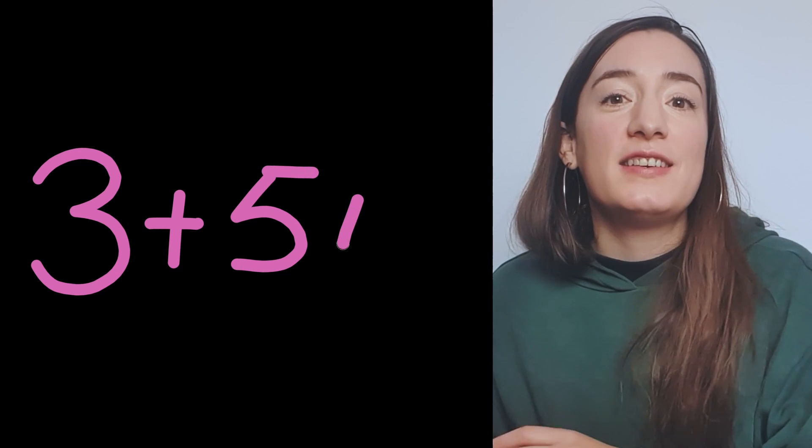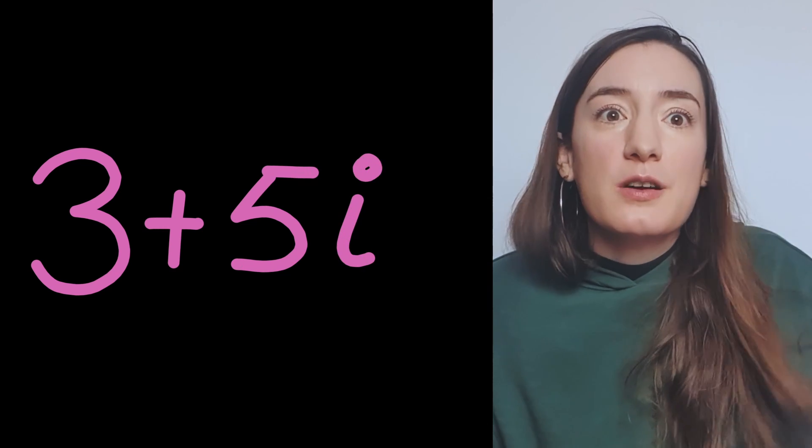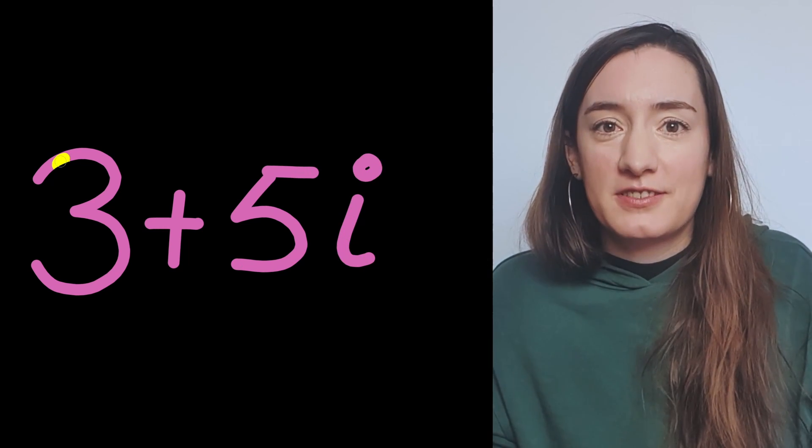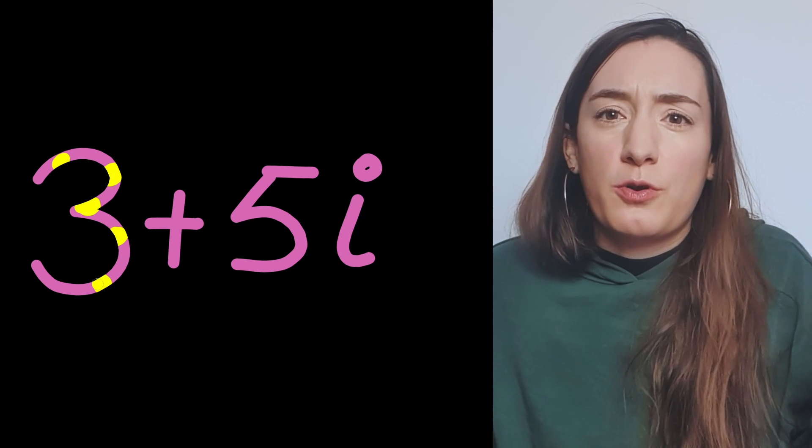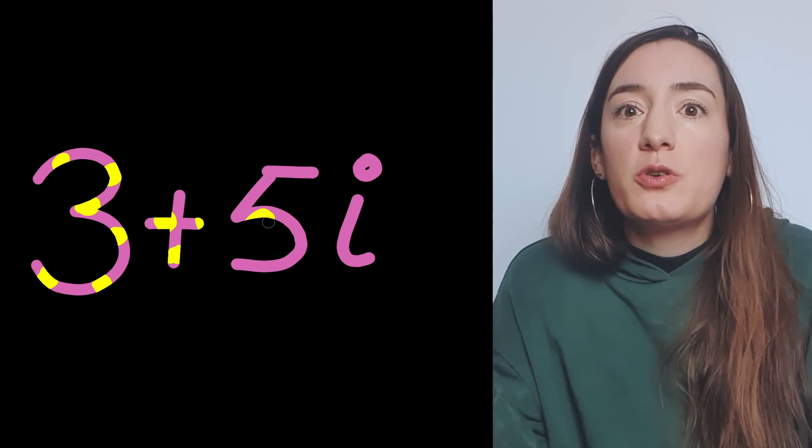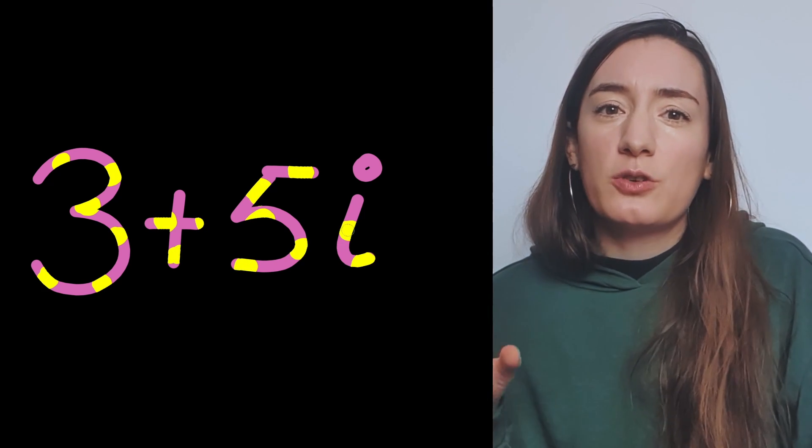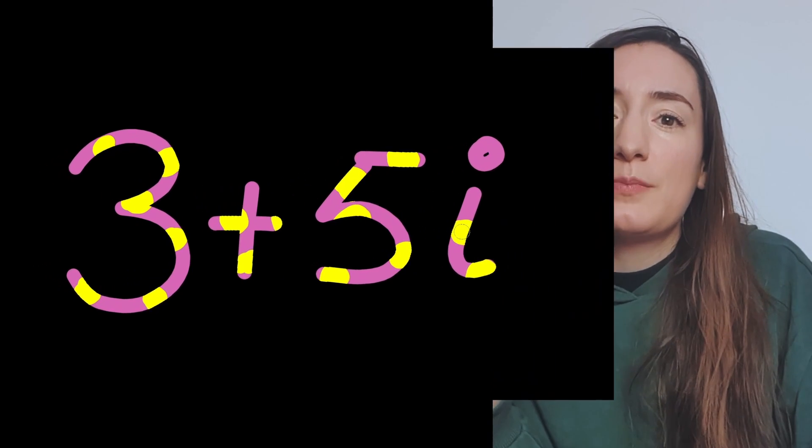And sometimes we need special numbers to do mathematics operations that are not possible with the other numbers. And this is where complex numbers come in. A complex number is a number that has two parts, a real part and an imaginary part. The real part is just a regular number, like 3 or 5. But the imaginary part is a little bit different. The imaginary part of a complex number is represented by the letter i. And this letter represents the square root of minus 1.